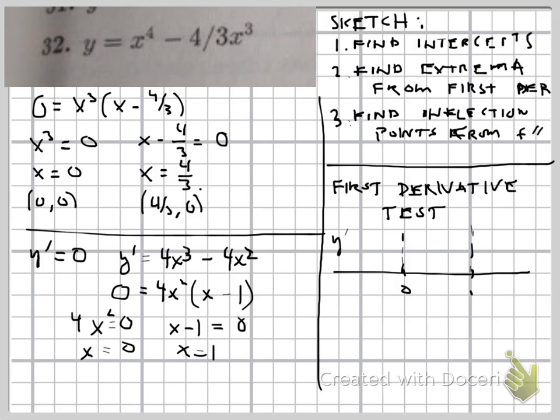But in between, we want to know whether y prime is positive or negative. And so we can test the point like negative one, we can test the point like 0.5, and a point like 10. It's not really critical as long as you have one point in each region.